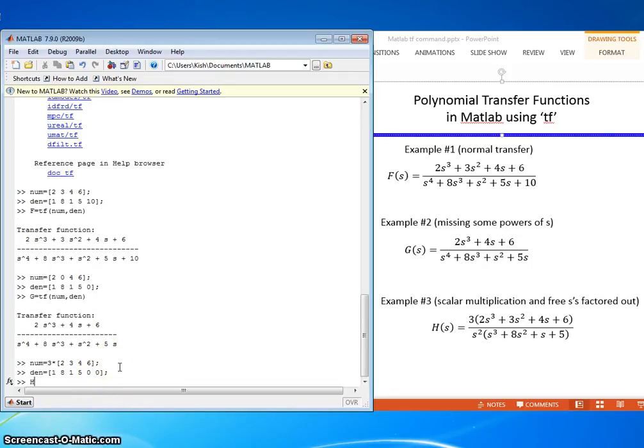Build our transfer function h equals tf, num comma den.